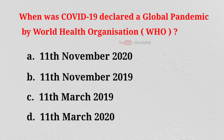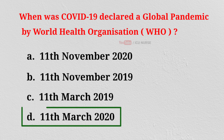When was COVID-19 declared a global pandemic by the World Health Organization? A. 11th November 2020. B. 11th November 2019. C. 11th March 2019. D. 11th March 2020. And the correct answer is D: 11th March 2020.